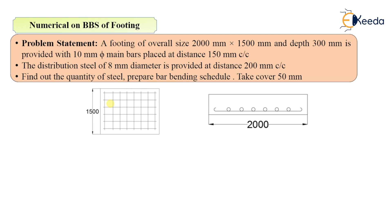A footing of overall size 2000mm by 1500mm and depth 300mm is provided with 10mm diameter main bars placed at 150mm center to center. The distribution steel is of 8mm diameter and it is provided at 200mm center to center. You have to find out the quantity of steel, prepare the bar bending schedule, and the cover given is 50mm.